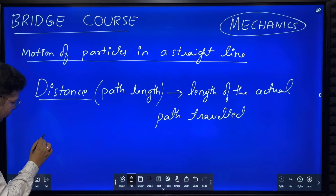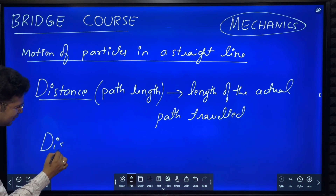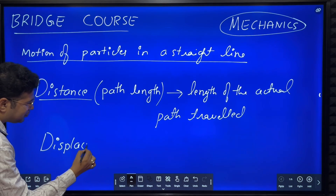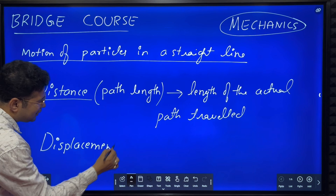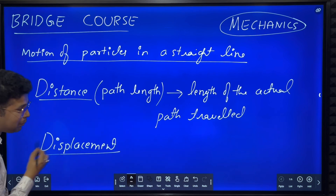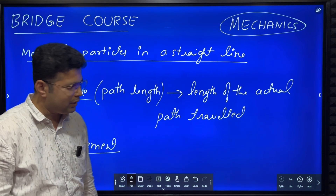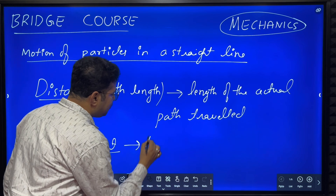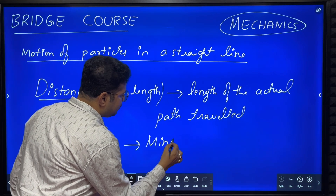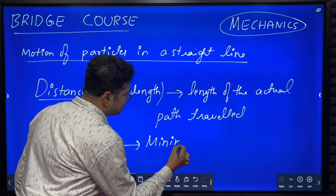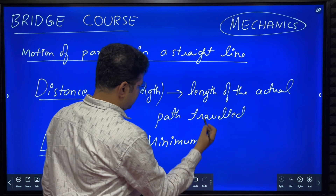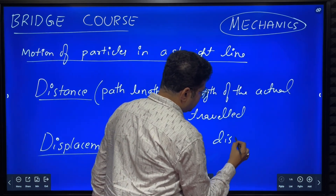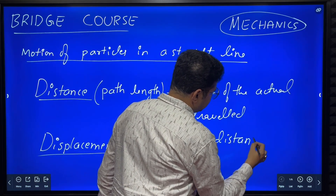You might have also studied something called displacement. What is displacement? Displacement means the minimum distance between two points. The minimum distance between two points is called displacement.